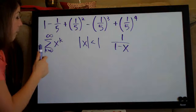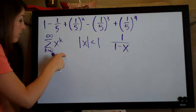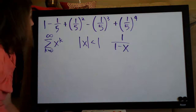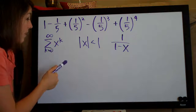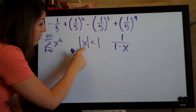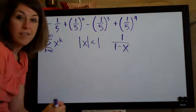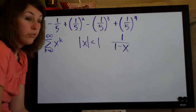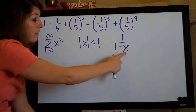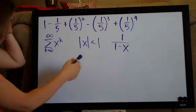The first thing we need to do is figure out whether our series takes the form of x^k. If it does, we need to find what x is, because once we've found x, we plug it in. If the absolute value of x is less than 1, the series converges; if it's greater than or equal to 1, the series diverges. If the series does converge, we plug x in again to find the sum.